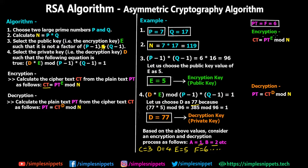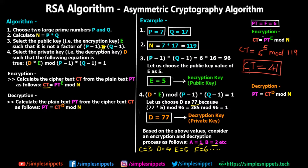Substituting the values into the encryption formula: CT = PT^E mod N = 6^5 mod 119. Using a scientific calculator, 6^5 = 7776, and 7776 mod 119 = 41. So the ciphertext CT = 41. This is the result of encrypting the plaintext F (which is 6) — we get ciphertext 41.